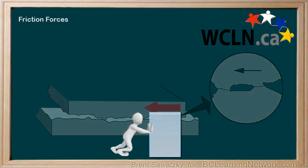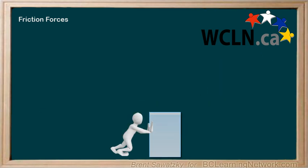We know that when we push on a box sitting on concrete, it's pretty hard to move. We can push on it and the friction force pushes back. If we push with a force of 100 newtons to the right and it doesn't move, we know that the friction force is also pushing at 100 newtons, but to the left.